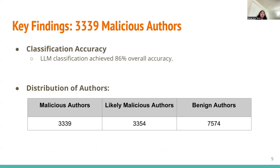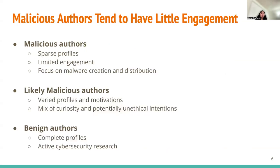So, what did we find? We have found a significant 3.3k authors as malicious, where our model achieved an impressive 86% accuracy. We have identified interesting characteristics among malware authors — malicious authors often maintain a sparse profile and focus on harmful activities.